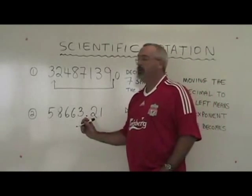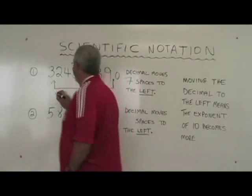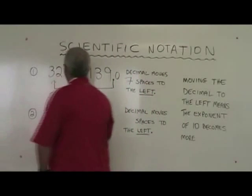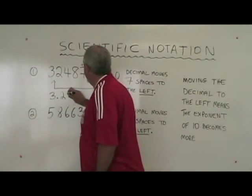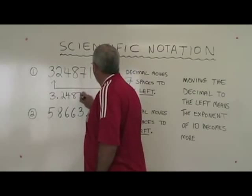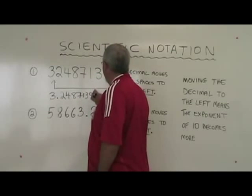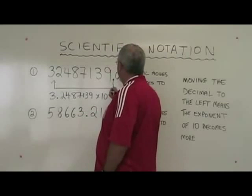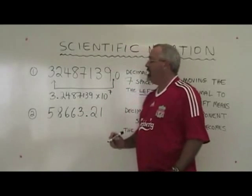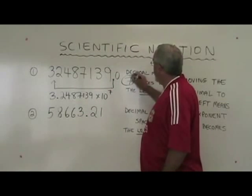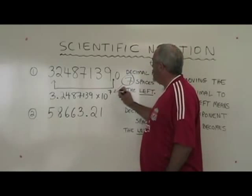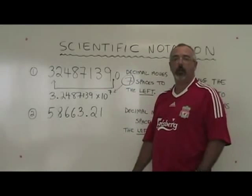Our new number in scientific notation is 3.2487139 times ten to the power of seven. The number of spaces you move to the left becomes the exponent of ten in the scientific notation version of the number.